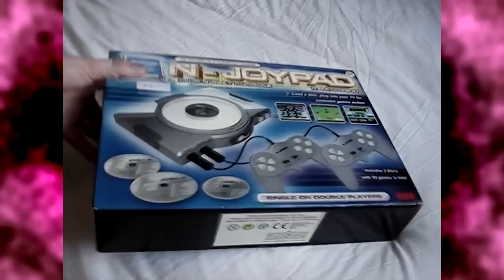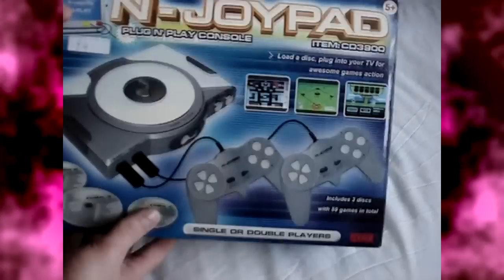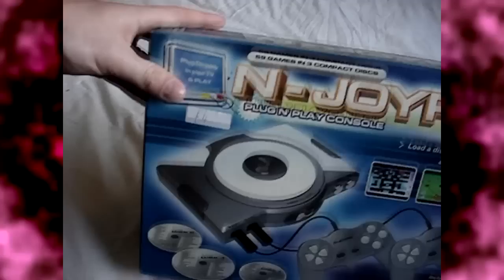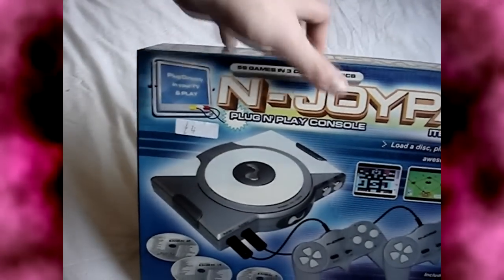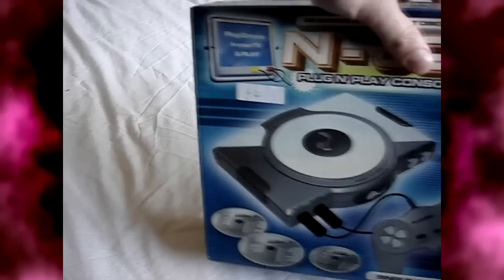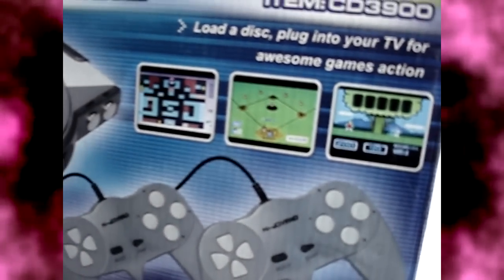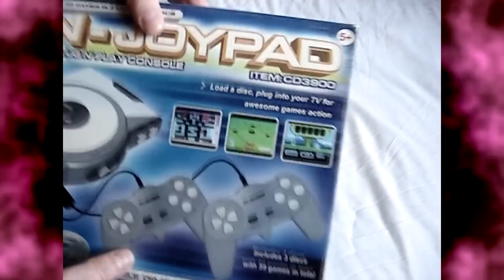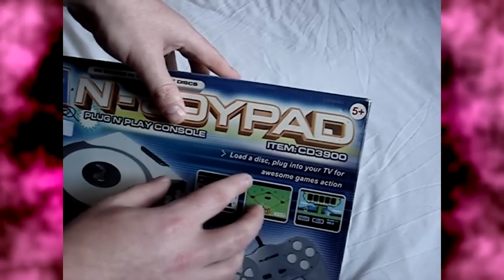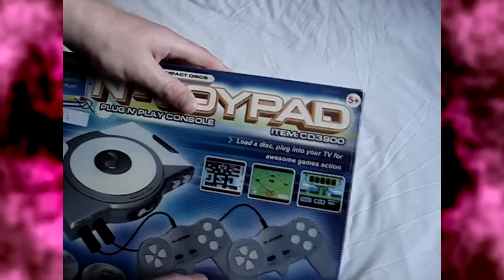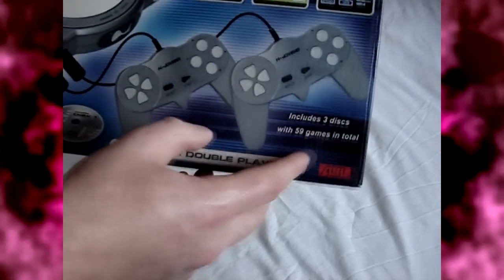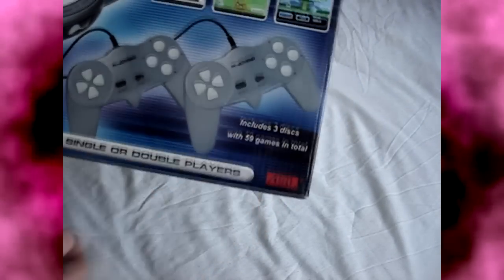Right! Anyway, let's have a look at the box first. Yes, it's generally representative of the boxes that cheap tat come in. There are some three exciting games so you can already see what amazing graphics you're not going to get. Load a disc, plug into your TV for awesome games action. Includes three discs with 59 games in total. Oh, the excitement. Look at those discs. State of the art, buggers them. Oh yeah.